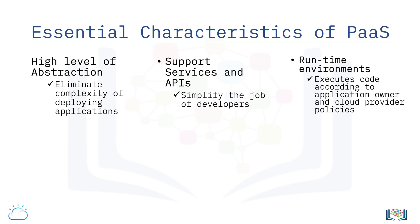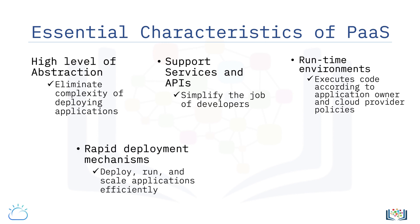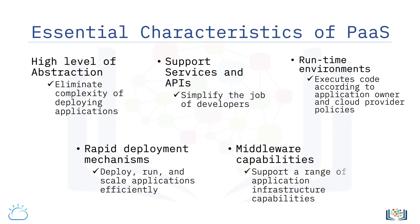The PaaS runtime environment executes end-user code according to policies set by the application owner and cloud provider. Many PaaS offerings provide developers with rapid deployment mechanisms, or push-and-run mechanisms, for deploying and running applications. PaaS offerings support a range of application infrastructure, or middleware, capabilities such as application servers, database management systems, business analytics servers, mobile backend services, integration services, business process management systems, rules engines, and complex event processing systems. Such application infrastructure assists developers by reducing the amount of code that must be written while expanding the application's functional capabilities.